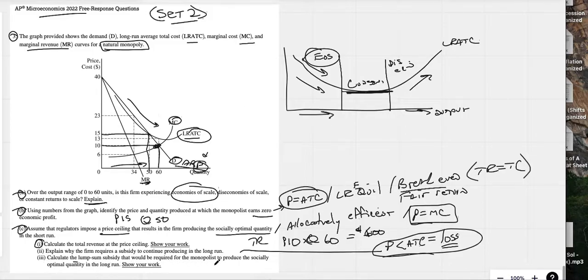Calculate the lump sum subsidy that would be required for the monopolist to produce a socially optimal quantity. We recognize they're already producing this 60 units of quantity. They have a price ceiling. They're regulated, so this price ceiling right there, they're already producing.